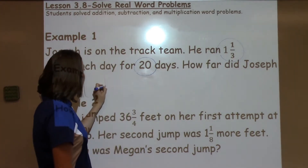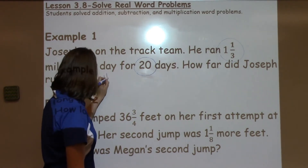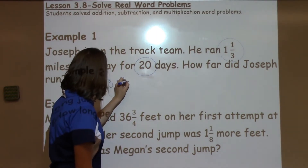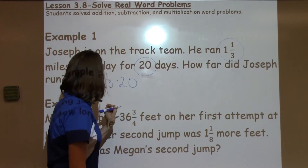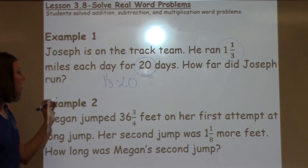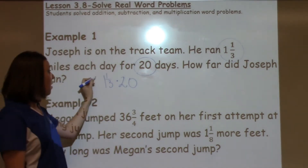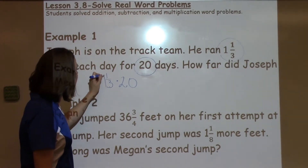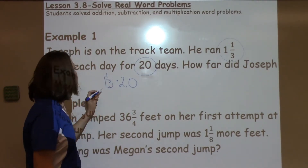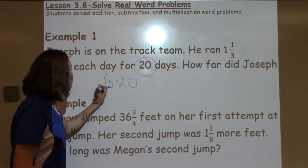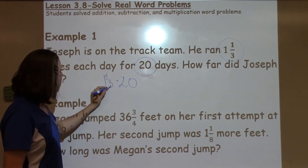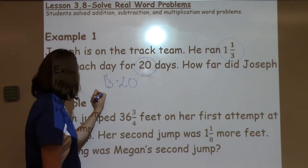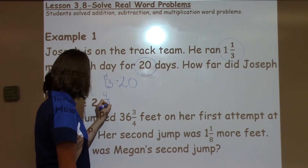I'm going to write on my problem that I have 1 and 1 third times 20. Now, I know to multiply these fractions together, I need to change this to an improper fraction. So this is the C method — around the world, loop-de-loop, whatever your teacher calls it. So we have to multiply and then add. So I have 3 times 1 is 3, plus 1 more is 4, so that becomes 4 thirds.